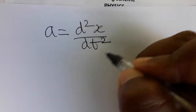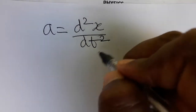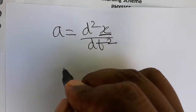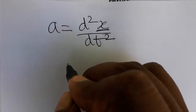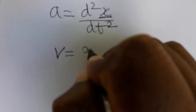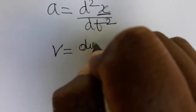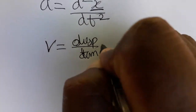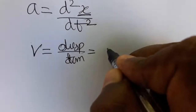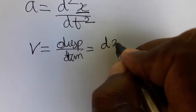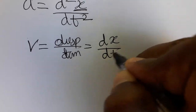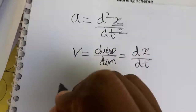Hello friends, today we are going to see how acceleration is a double time differentiation of x. Here x is a displacement. Velocity is equal to displacement by time. So now we are taking rate of change of displacement, that is called dx by dt — change in displacement with respect to time.